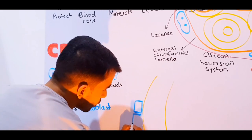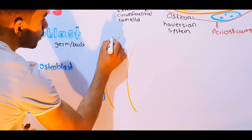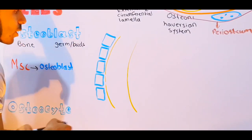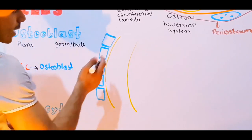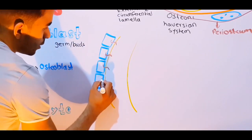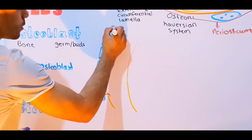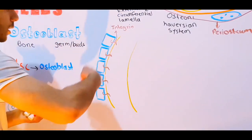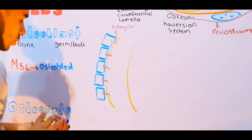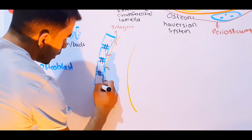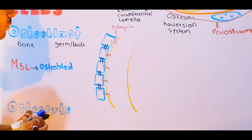These cuboidal cells are attached to the matrix via special proteins called integrins, and they are connected to one another via gap junctions or adherent junctions.